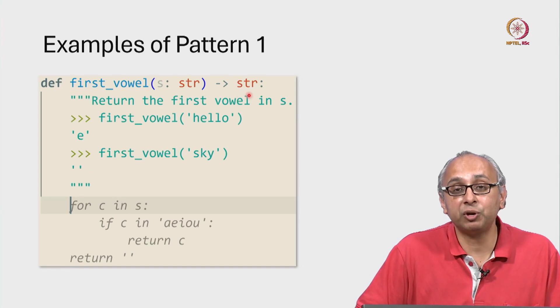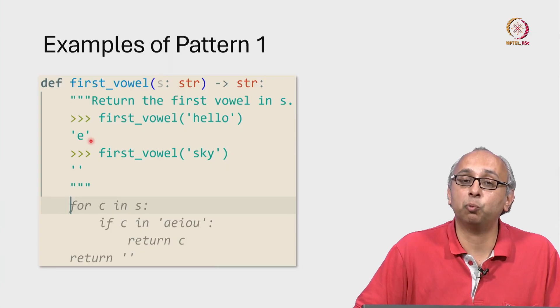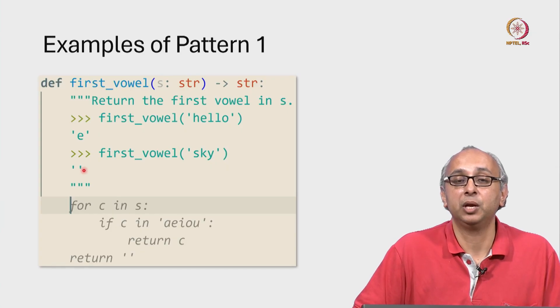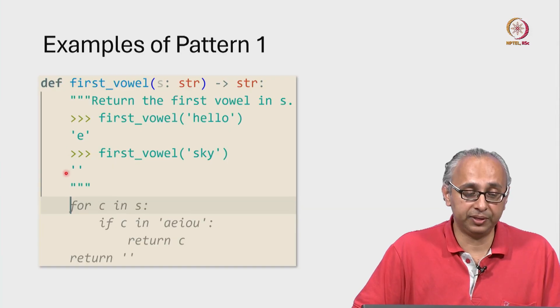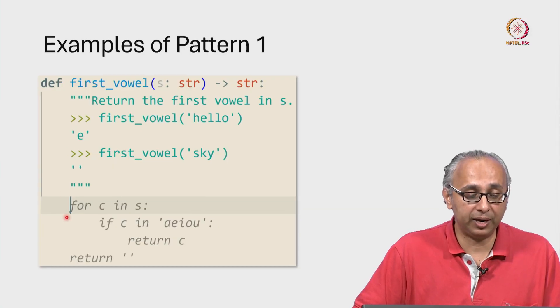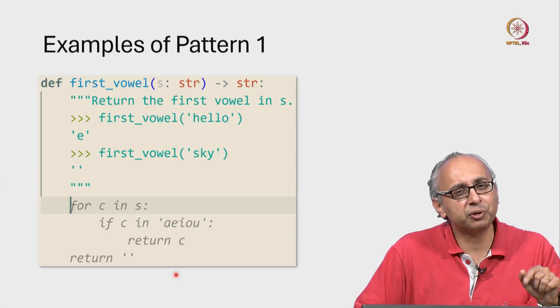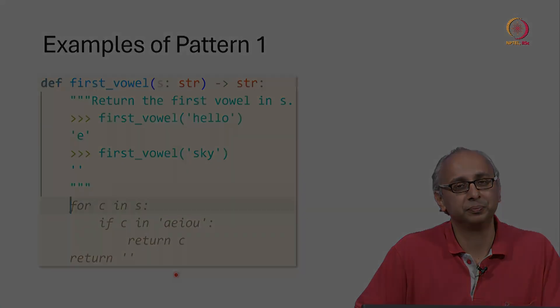So, we will always return some string, either a string of length 1 which is the first vowel or the empty string. So, with this doc string and this doc test, our AI has suggested this code. Pause the video and see if you agree with this code.